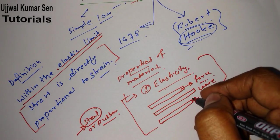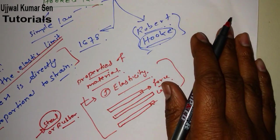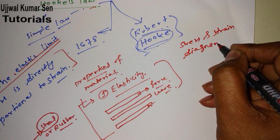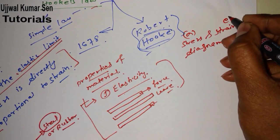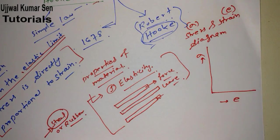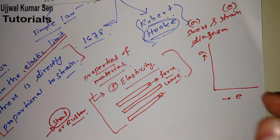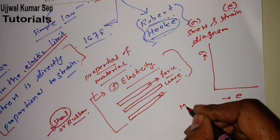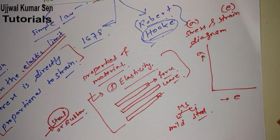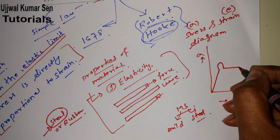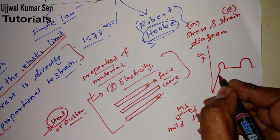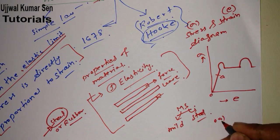Now let's come to the elastic limit. To understand elastic limit, you need to understand the stress-strain diagram. Stress is denoted by sigma (σ) and strain is denoted by small e. The stress-strain diagram varies for different materials, but here we are talking about the diagram for mild steel (MS), which is very popular because it helps us understand these concepts properly.